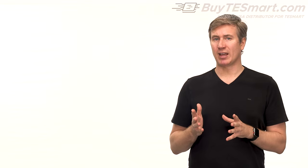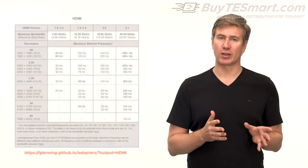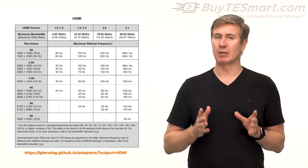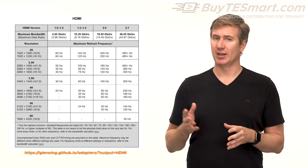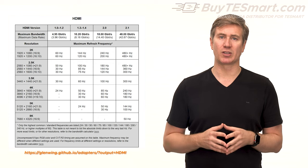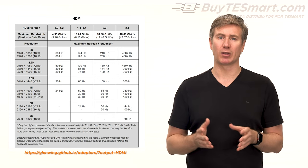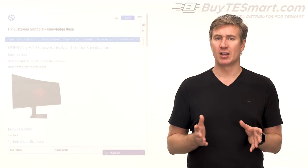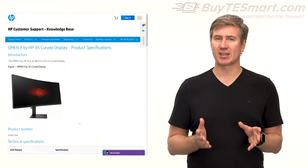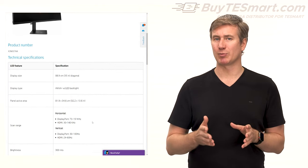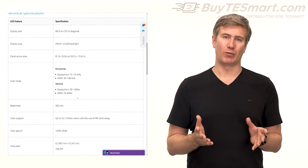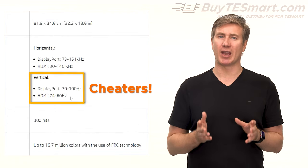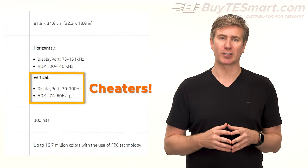These dual monitor KVMs are capable of HDMI 2.0 refresh rates, but the speeds might be limited by other components in the connection string. Adapters are notorious for using cheap chipsets that reduce bandwidth. Also, some monitors like to advertise higher refresh rates but then limit the speeds for the HDMI ports to save costs. Review your monitor's manual to confirm that the HDMI is rated for the speeds that you expect.